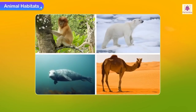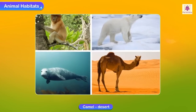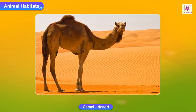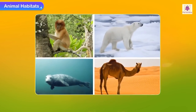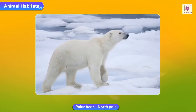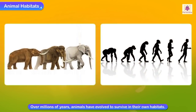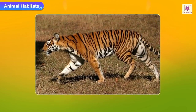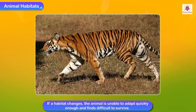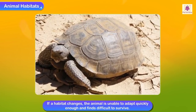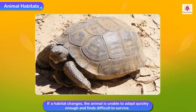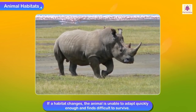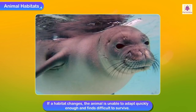Different animals live under different conditions. A camel lives comfortably in the hot desert, and a polar bear is very happy living in the freezing cold climate of the North Pole. Over millions of years, animals have evolved to survive in their own habitats. But if a habitat changes due to decreased rainfall — mostly because of global warming — the animal is unable to adapt quickly enough and finds it difficult to survive.